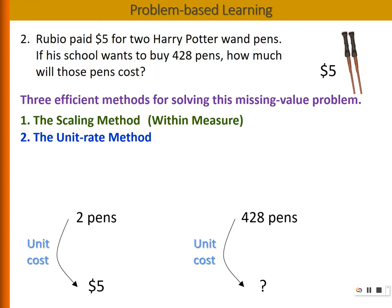In fact, we can think of a unit cost. Two pens cost $5, so each pen would cost $2.50. If we know the relationship between pen and dollar, which is $2.50 per pen, then we can use this relationship to find the cost for 428 pens.